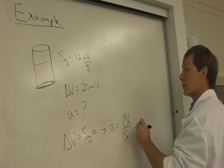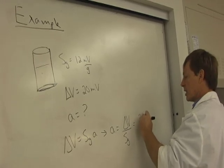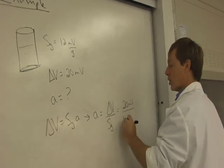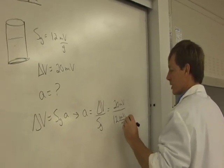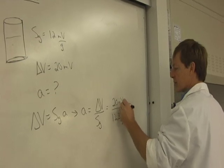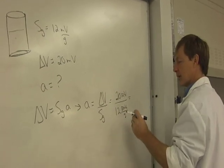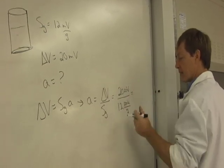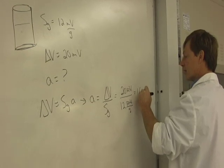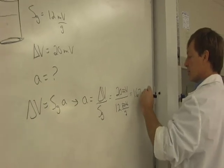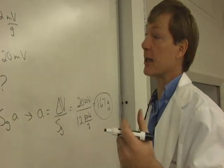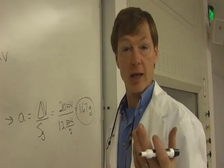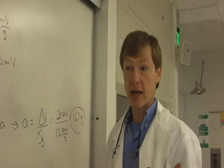Will the units work out? So we get 20 millivolts over 12 millivolts per g, which is equal to, millivolts cancel, that's going to be 1.67 g's. So that's how you can take an acceleration, a pressure difference, and produce a voltage out of it.